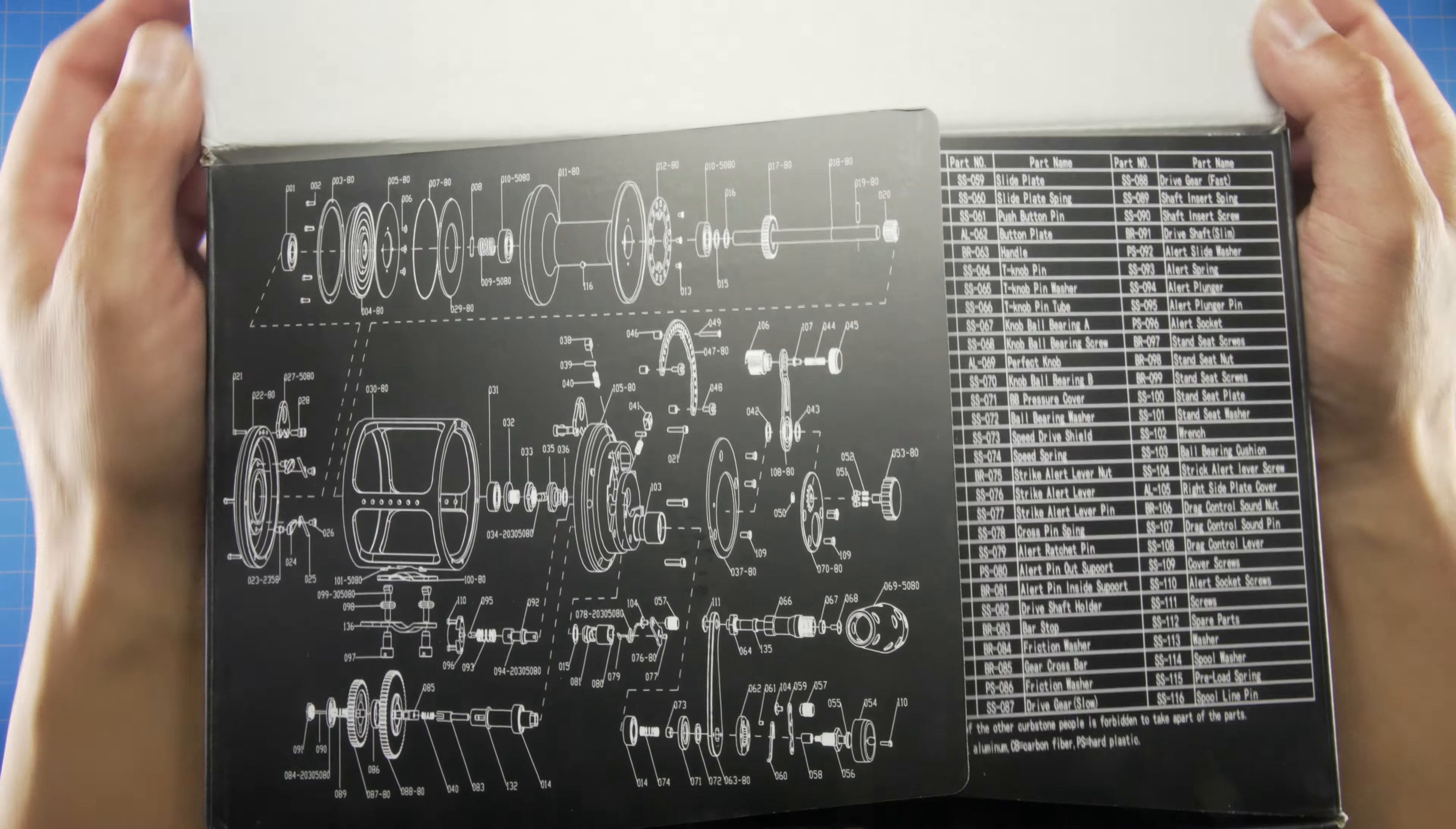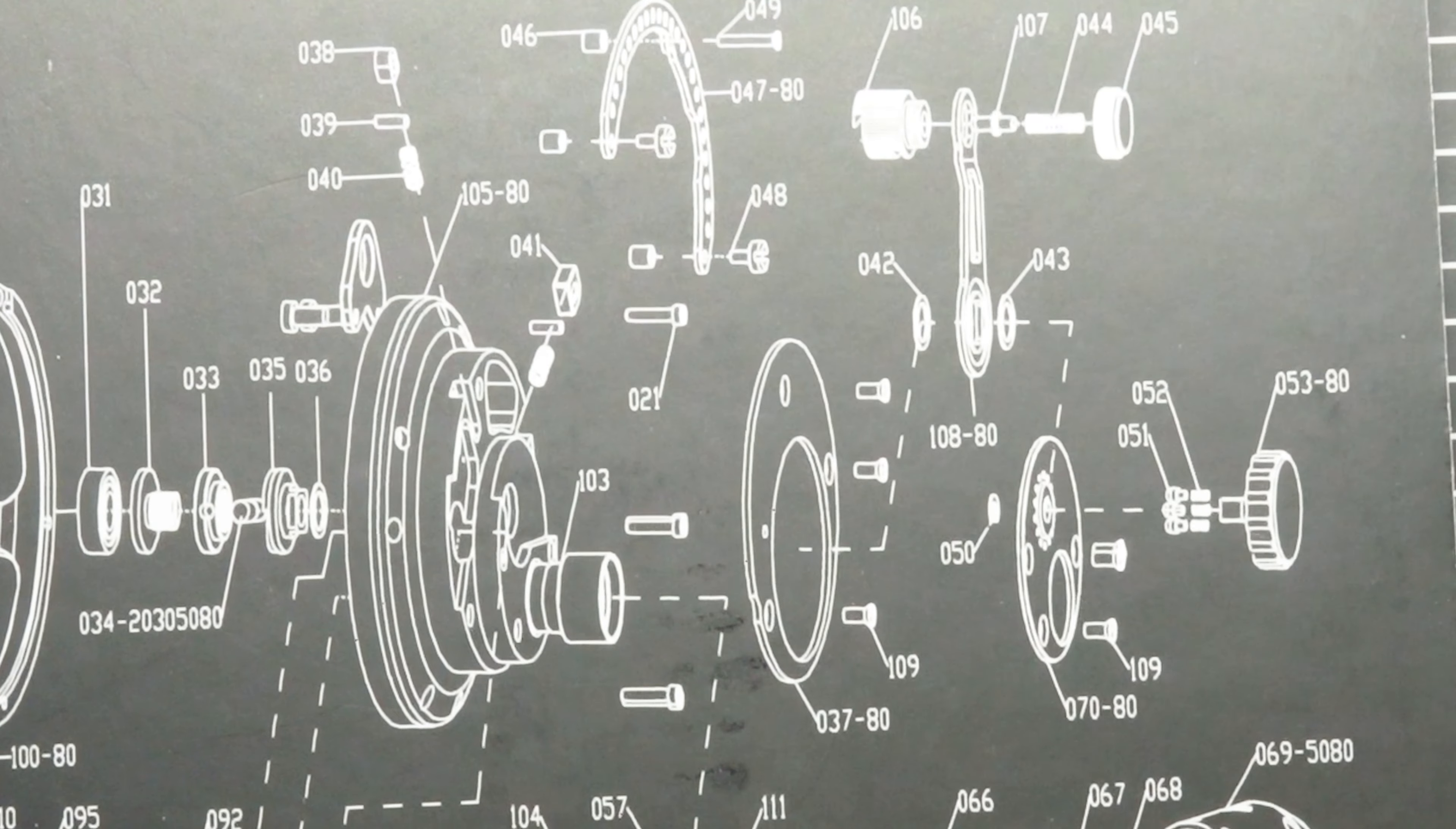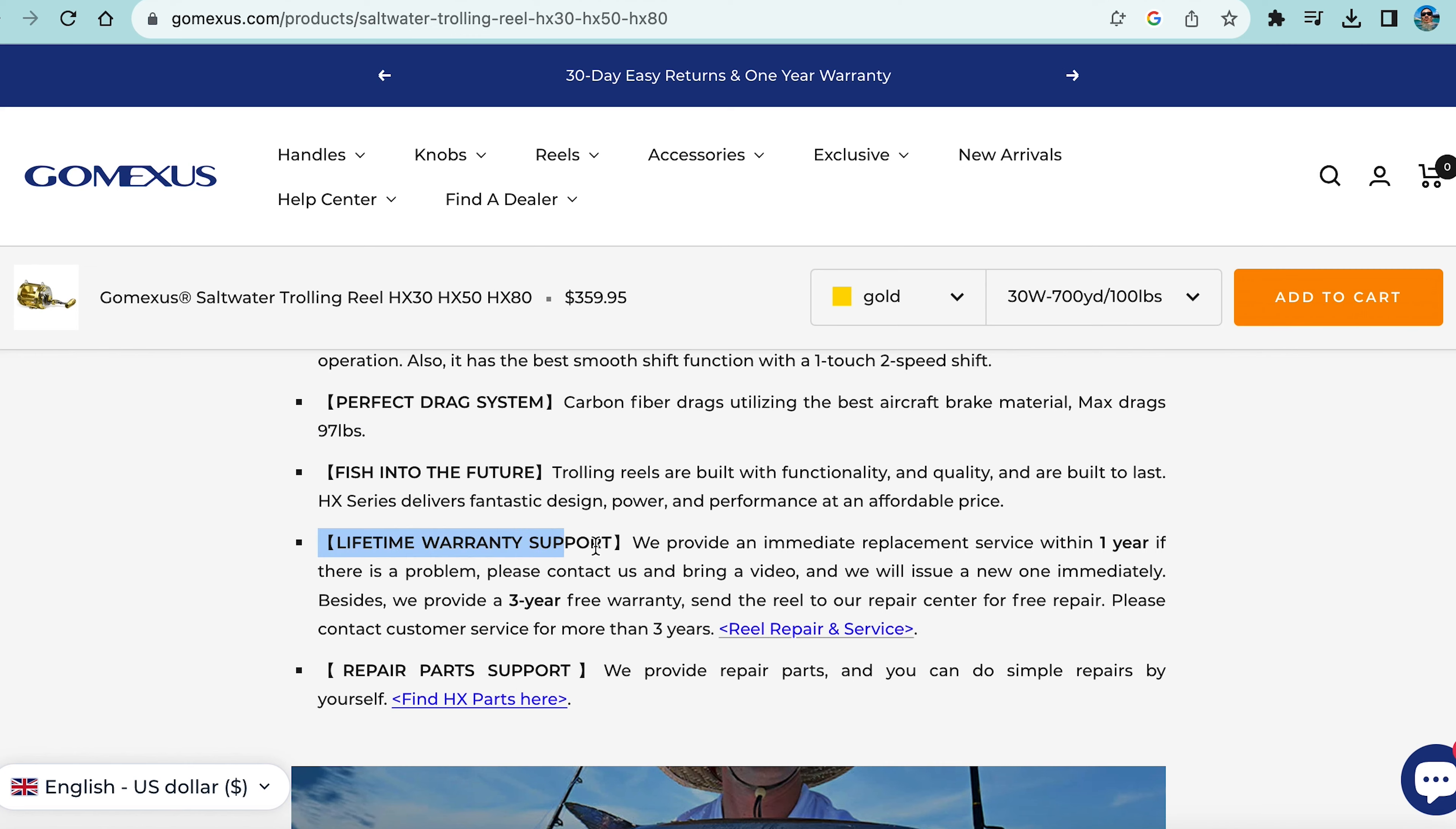Let's open this up. Right on the box immediately, you're going to get a schematic of the reel itself and it gives you everything laid out along with the part numbers that you need. I looked at Gomexis website on the detail of this.